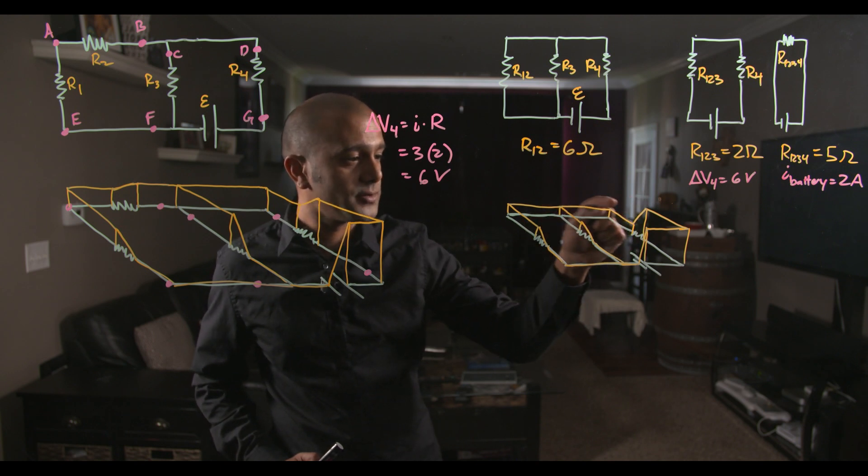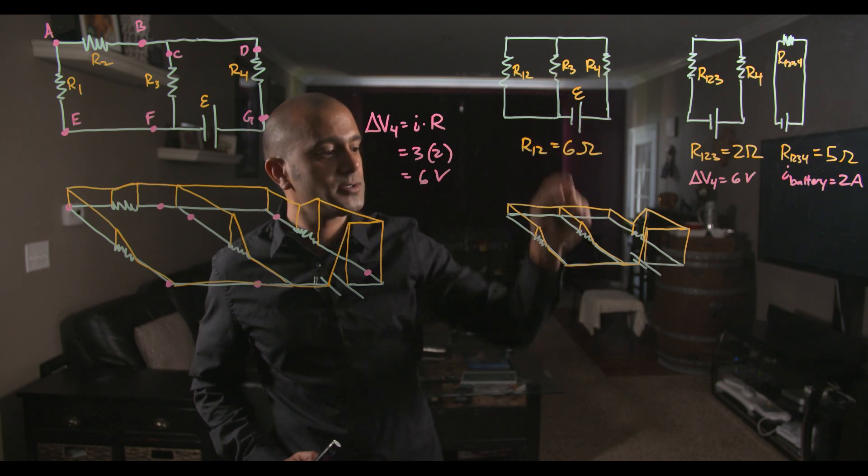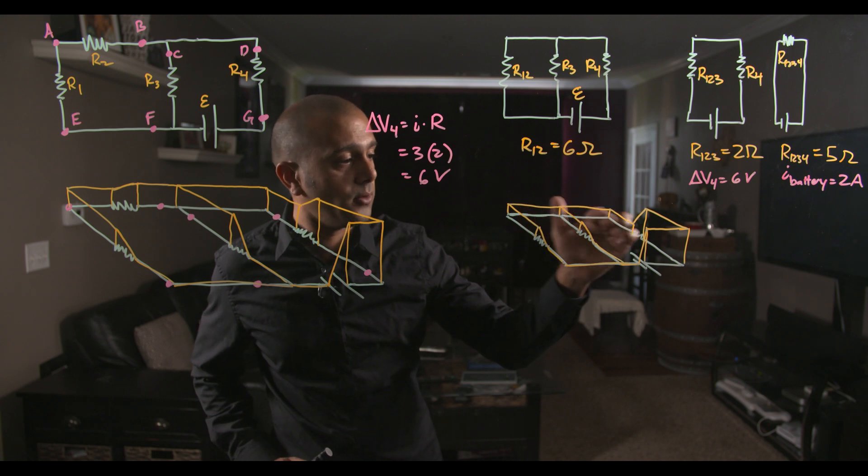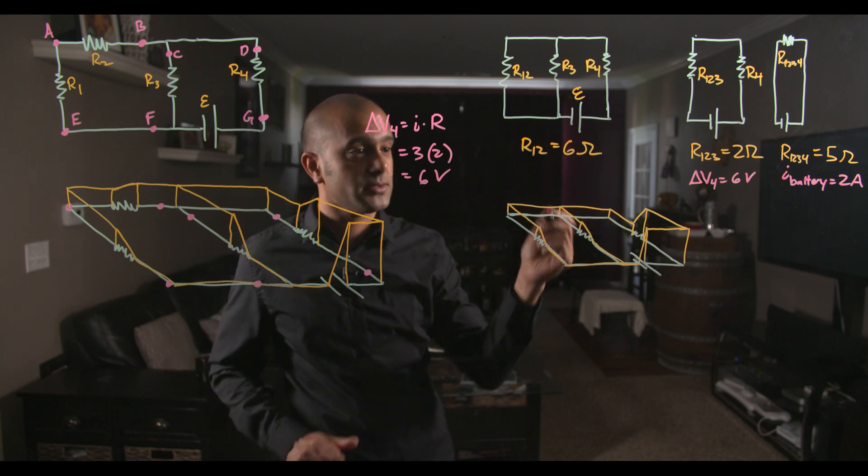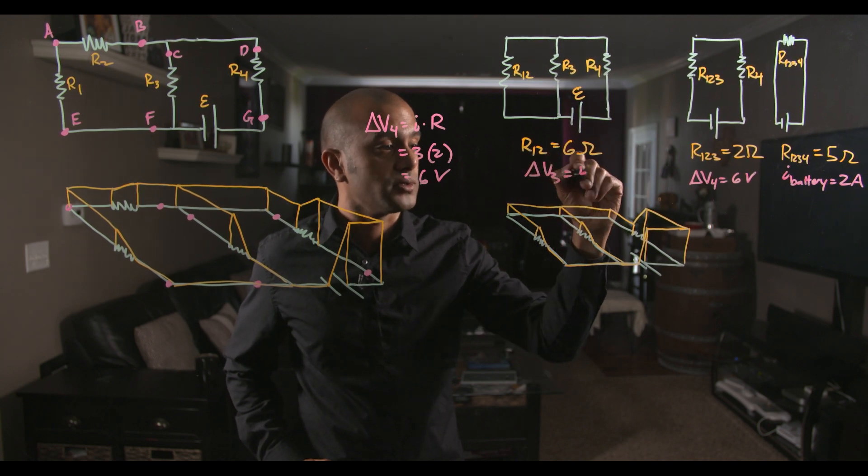So now you're at 4 volts over here. And you know that you have to get back down to 0 across that resistor. So across resistor 3, certainly the voltage drop has to be 4 volts because you're going from 4 down to 0. So that immediately tells us that the voltage across resistor 3 is 4 volts.